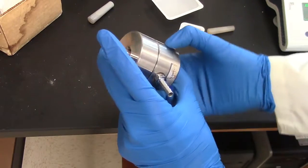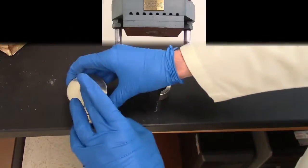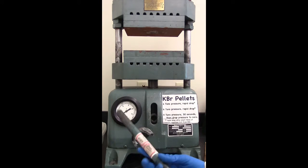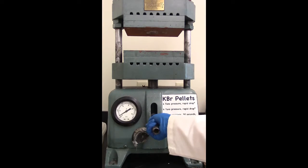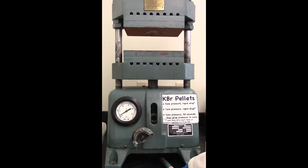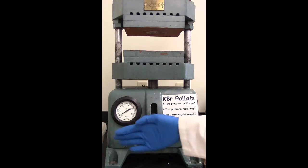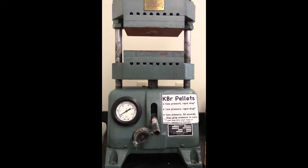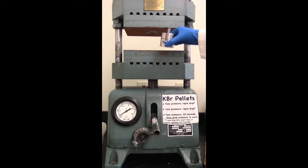Now we're going to put it into the KBR press. So this is the KBR press. You can see here that it has some instructions on how to make a KBR pellet. So you're going to stick this bar handle into the slot here. When you're finished with this, this should always come out so that nobody walks up and stabs themselves on that.